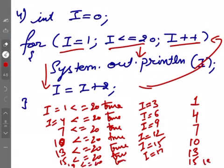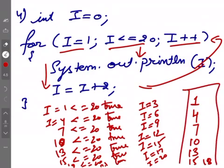So print ho gaya 15 lekin I 17 ho jayegah, phir idhar aega 18, 18 less than equal to 20 is true, 15 ke baad next value 18 print ho jayegi, it will become 20 and then it will become 21, 21 less than equal to 20 is false. So aap ke paas screen page output aegah woh gaya 1 4 7 10 13 15 18 all on different lines kyunki system.out.println se print hua hai.